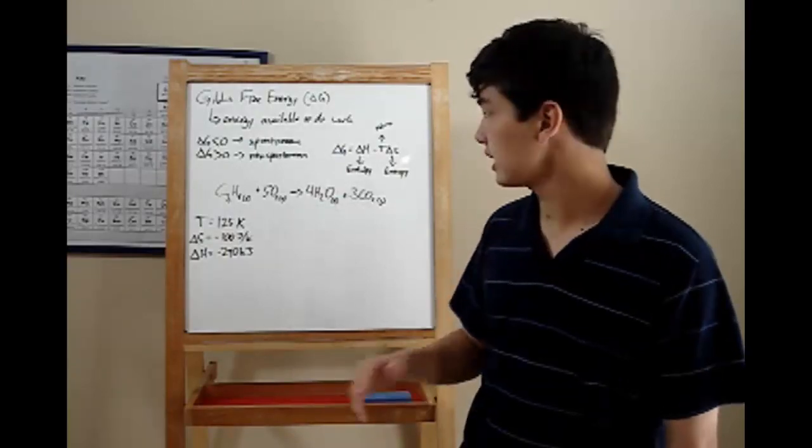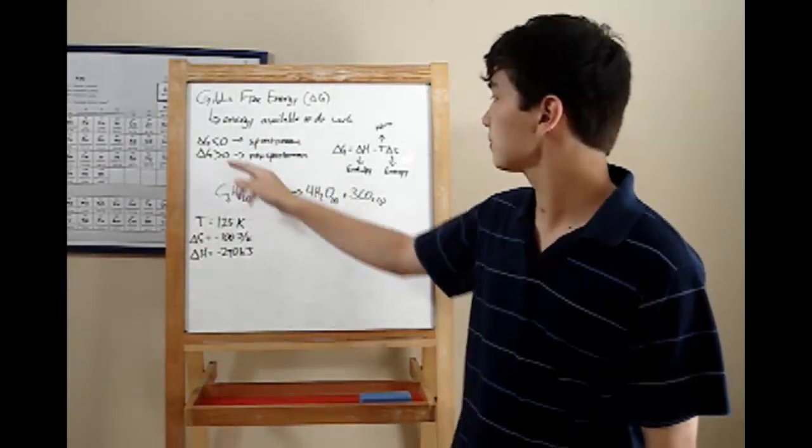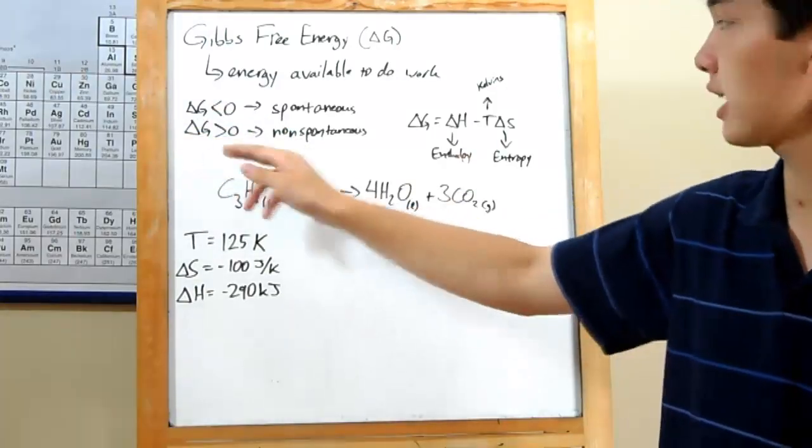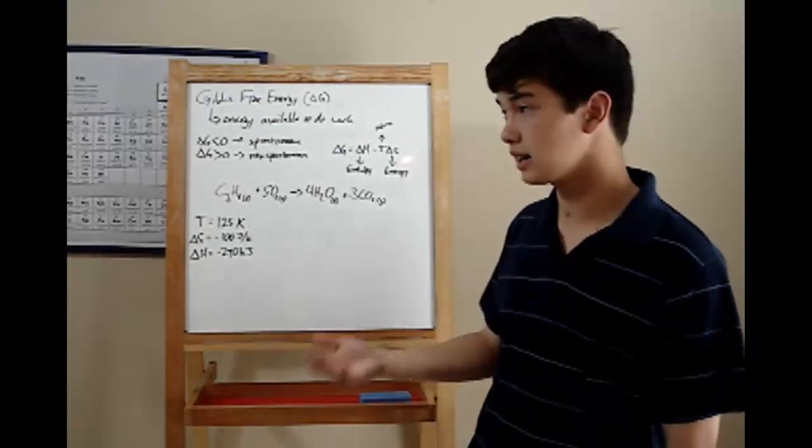What you'll need to know right now is whether or not your reaction is spontaneous. If your delta G is less than zero, your reaction will be spontaneous. That means you can more or less just throw the reactants in a bucket and your reaction will happen.